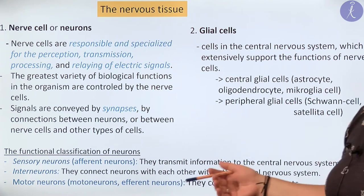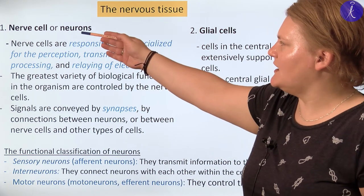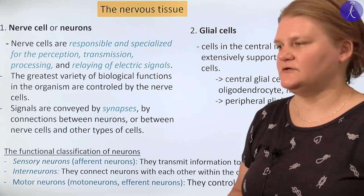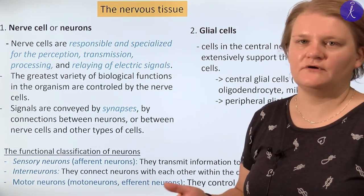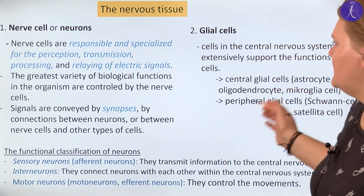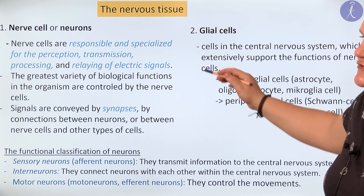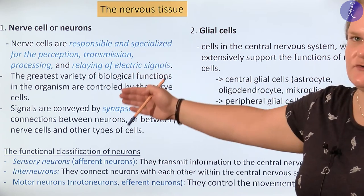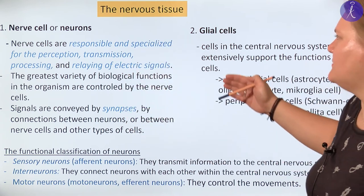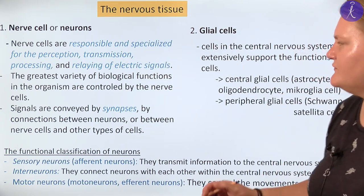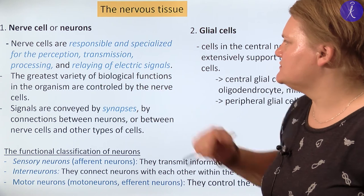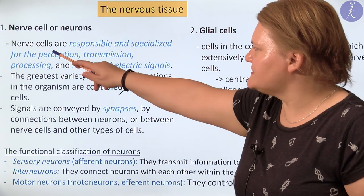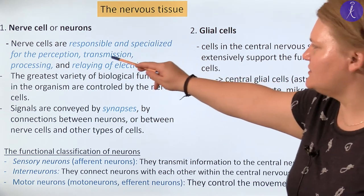When thinking about the nervous tissue, many people imagine just one type of cell, which is the nerve cell, also called the neuron. But you should know that we have another type of cell too, which are the glial cells, and they together build up the nervous tissue.